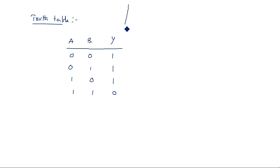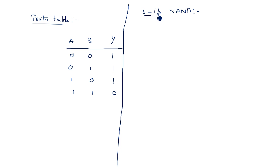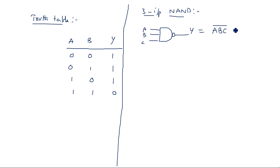Similarly you can also design a 3-input NAND gate. A 3-input NAND gate has three inputs A, B, C with a bubble at the output, and Y equals ABC whole bar. As there are 3 inputs, there are 2 power 3 equals 8 number of combinations: 000, 001, 010, 011, 100, 101, 110, 111.